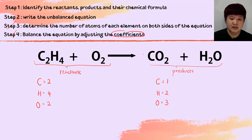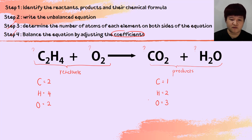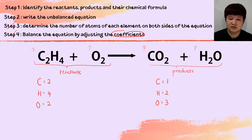What is a coefficient? The number sitting in front of your molecule is what we call the coefficient. Let's start balancing. I have 2 carbon, 4 hydrogen, 2 oxygen on the reactant. Which one should we balance first? Since oxygen is present in both products (CO₂ and H₂O), oxygen will be the last thing we balance.